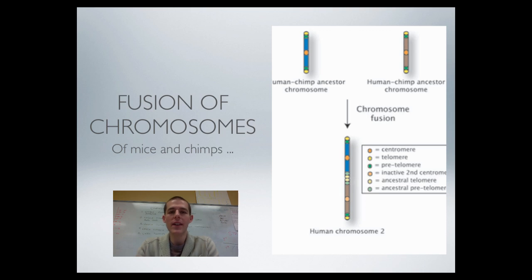Another way that you can increase the amount of genetic material or change the amount of genetic material is through the fusion of chromosomes. It says down there at the bottom of mice and chimps. There has been some analysis work done on our genetic material compared to the genetic material of other mammals. And there's been a couple interesting things that have been found.